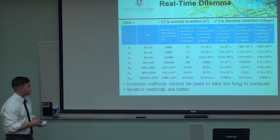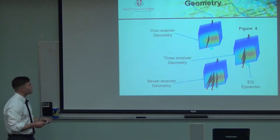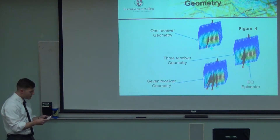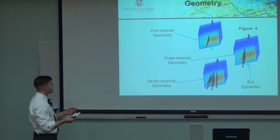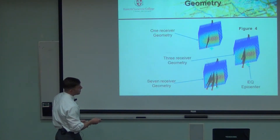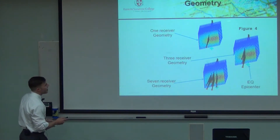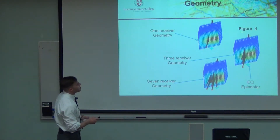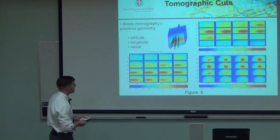Inverting normally is expensive; inverting iteratively is much cheaper because time is money. Let's look at the geometries. This is simulated data over the ionosphere over Haiti. This blue plus is the epicenter of the earthquake. We show results with one receiver, three receivers, and seven receivers going to one satellite. You can see there's a change — directly over the epicenter, there is significant activity.